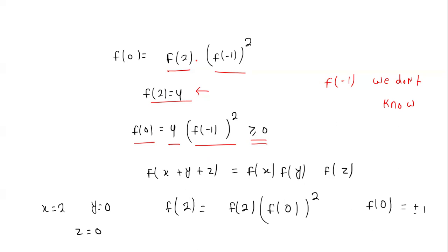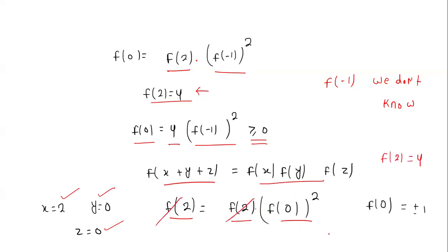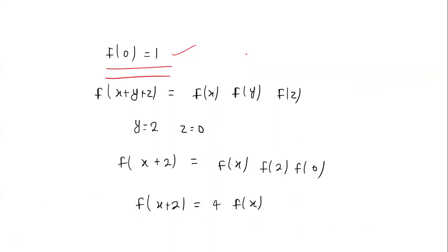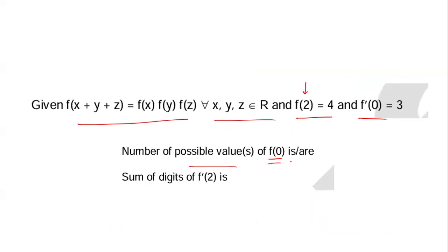Now, using the original relation again, put x = 2, y = 0 and z = 0. We get f(2) = f(2)·[f(0)]². Since f(2) = 4, this cancels and [f(0)]² = 1, giving two possible values: +1 or -1. But since we know f(0) ≥ 0, the only possible answer is f(0) = 1. So there is only one possible value of f(0), which is 1.